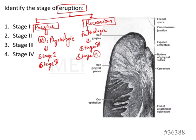We have to remember three landmarks while trying to identify the stage. The first landmark is the bottom of the gingival sulcus. The second is the apical end of the attachment epithelium. The third is the cementoenamel junction (CEJ). By knowing the position of the bottom of the gingival sulcus and the apical end of the attachment epithelium relative to the CEJ, we can assign staging to the eruption.